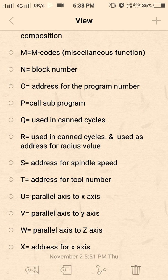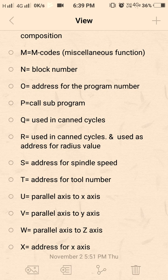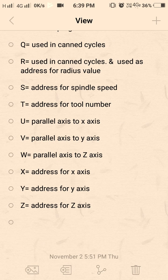S is known as spindle speed. T is the tool change command. U, V, W are also parallel axes to X, Y, Z — just like A, B, C and I, J, K, all these axes are parallel to X, Y, Z. And X, Y, Z are the main linear axes. If you have any doubts about this video, you can comment below.